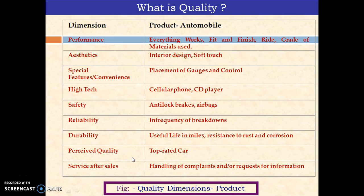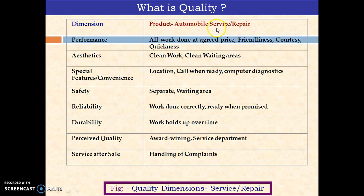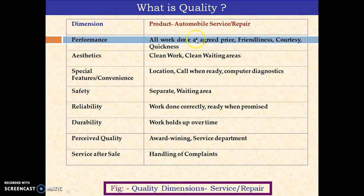If the same automobile is considered for its service and repair, the dimension changes. The definition of the dimensions changes: performance could mean all the work can be done at a great price. Aesthetics could involve the possibility that the service person offers a clean work environment. Reliability, individuality, perceived quality, and service after sales — these are different dimensions for automobile service and repair.